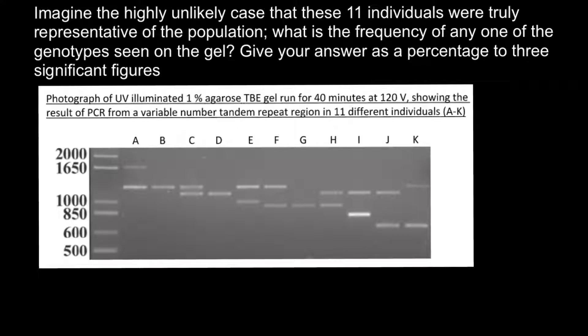As you can see, it's very easy to find that none of the genotypes are repeated. All the genotypes are unique and only appear once. So we can say that the frequency of each genotype would be 1 divided by 11.